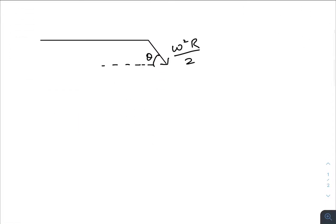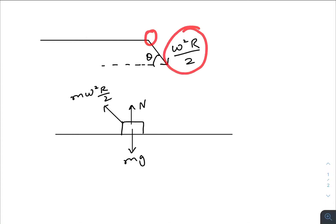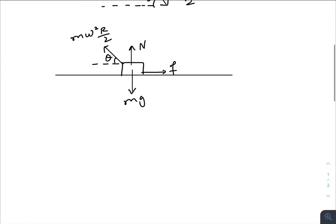If I change my reference frame to the bar and start watching the block, the forces acting on the block are: mg downwards, normal upwards, and the pseudo force — which is mω²(r/2) — because I am standing at this point and the acceleration of this point is in this direction, so the pseudo force acts along this direction. The angle is θ and friction must act in the opposing direction.